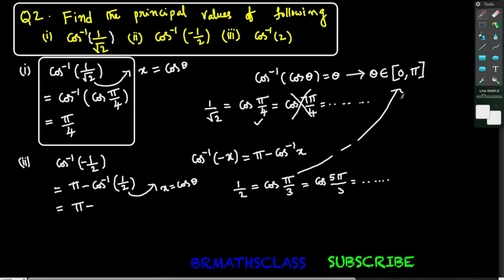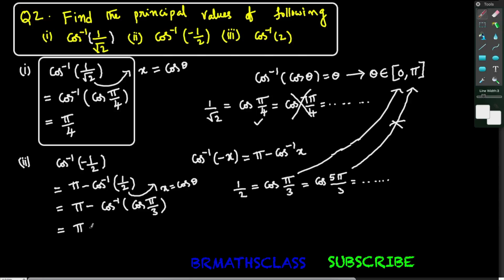Yes, 60 degrees is in the closed interval 0 to pi. Now 5 pi by 3: pi by 3 is 60, so 5 into 60 is 300 degrees, which is not in the closed interval 0 to pi. So we choose pi by 3. I write cos inverse of 1 by 2 as cos inverse of cos pi by 3. This is of the form cos inverse of cos theta, and by the formula cos inverse of cos theta equals theta, this gives pi by 3.